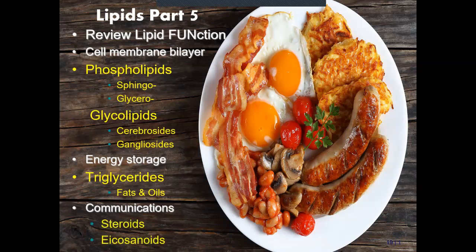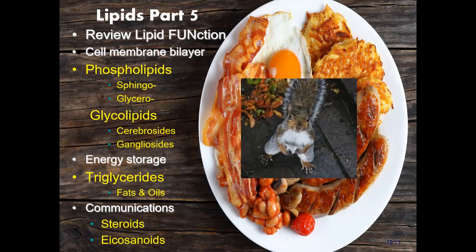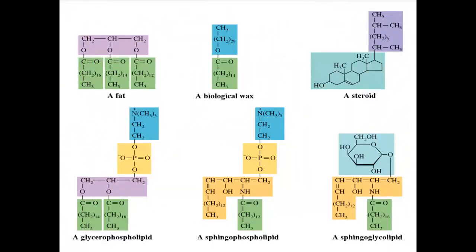Our third big lipid group is communication. The last slideshow covered steroids; today's is about eicosanoids. Steroids are long-distance — hormones that travel throughout the body. Eicosanoids are very localized, acting from one cell to the one next door. This is also when we get to talk about nuts — healthy lipids — as opposed to the unhealthy ones.